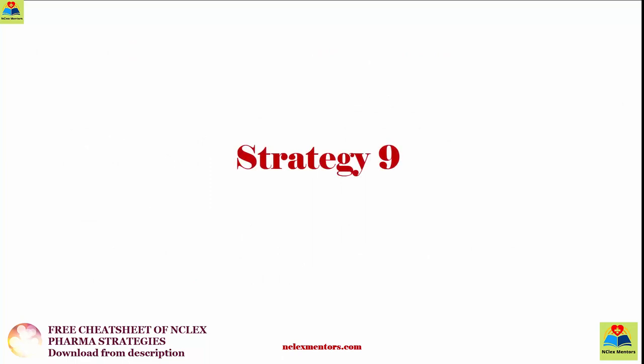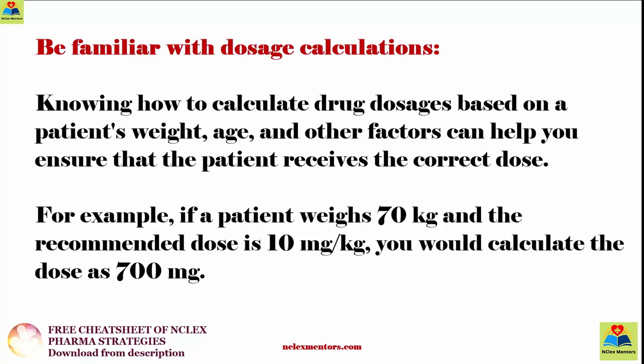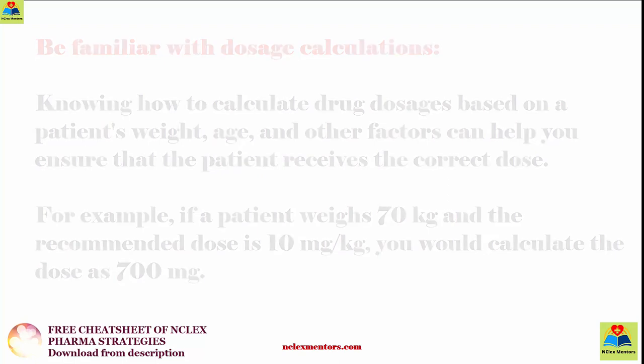Be familiar with dosage calculations. Knowing how to calculate drug dosages based on patient weight, age, and other factors can help you ensure that the patient receives the correct dose. For example, if a patient weighs 70 kilograms and the recommended dose is 10 milligrams per kg, you would calculate the dose as 700 milligrams.